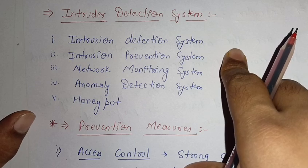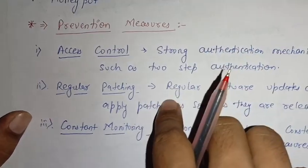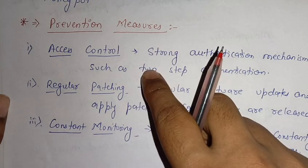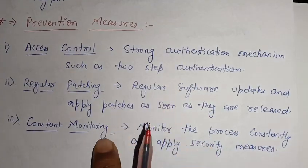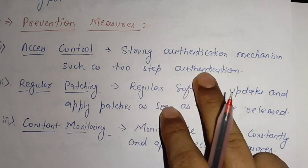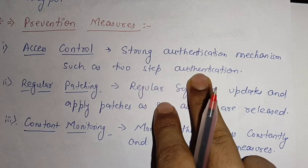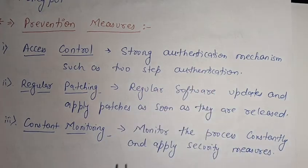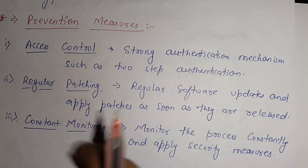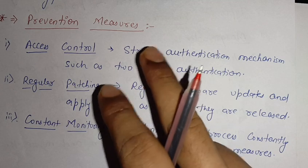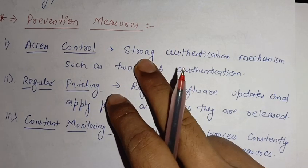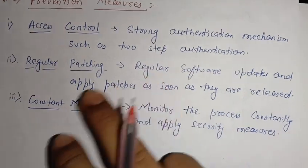These systems give an alarm to a particular website or application that intrusion is happening, so it can be prevented. There are three prevention measures: first is access control, second is regular patching, and third is constant monitoring. For access control, a strong authentication mechanism such as two-step verification should be used so that unauthorized persons cannot gain access.